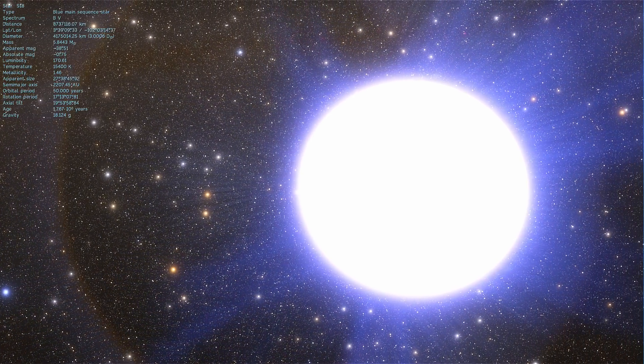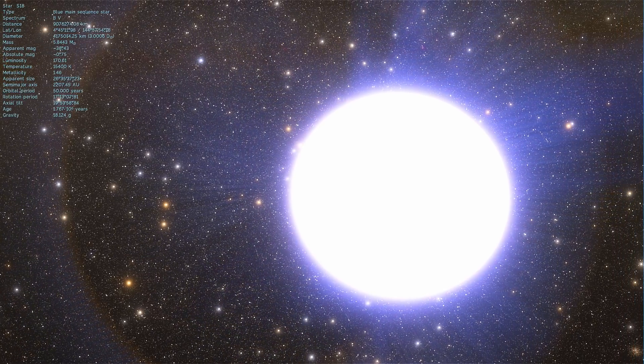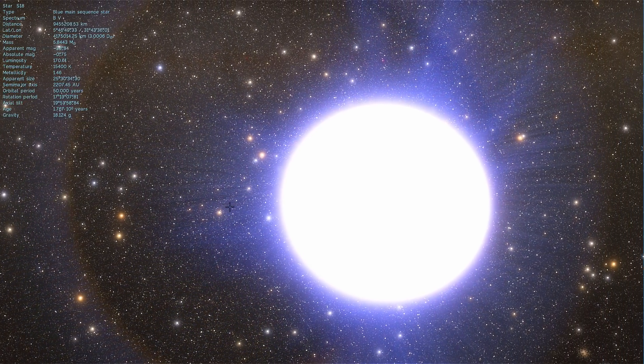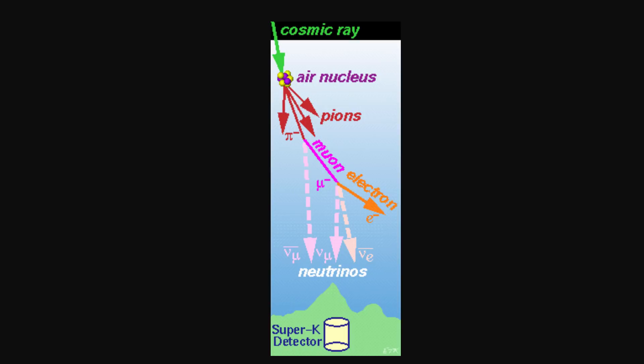such as supernovae, black holes, neutron stars, and also from our own sun. They're also produced when a cosmic ray enters our atmosphere and interacts with air, thus producing other neutrinos and electrons that can then be detected on Earth.